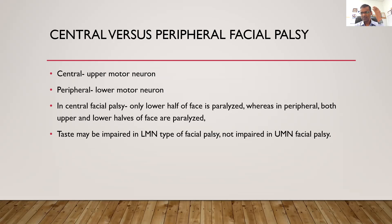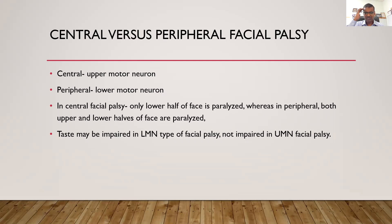Central means upper motor neuron type of facial paralysis and peripheral means lower motor neuron type. If the lesion is in the brain, the opposite side face is affected and only the lower half gets affected, because the upper half of the face receives innervation from both sides of the cerebral cortex. So in a brain lesion, only the lower half will get paralyzed on the opposite side. If you see a patient where only the lower half is weak and the upper half is normal, it could be a brain lesion. If both upper and lower halves are affected, it is usually a peripheral lesion. Also, if a patient has impaired taste sensation, that means it is a peripheral lesion and not a central one — in a brain lesion the taste is normal.